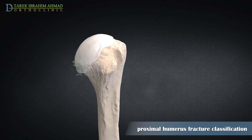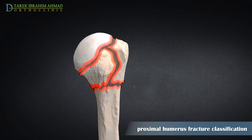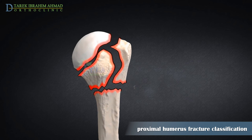Proximal humerus fracture includes all fractures to the anatomical neck, surgical neck, greater tuberosity, or lesser tuberosity, either isolated or in combination.